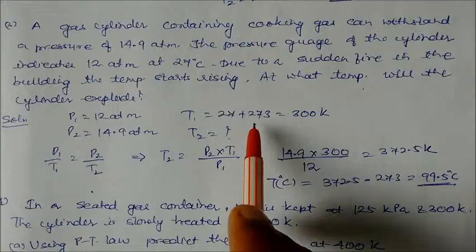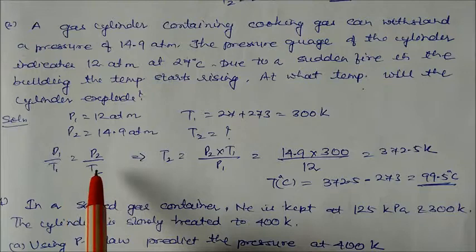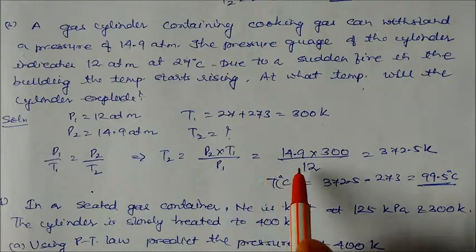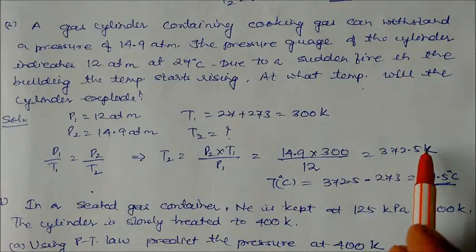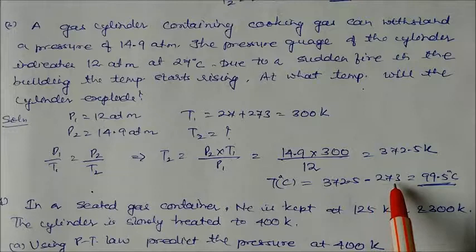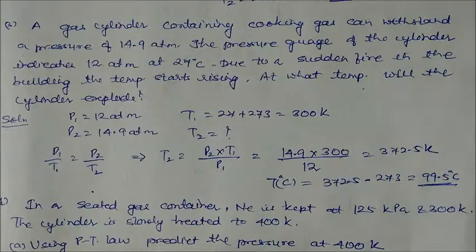Using Amonton's law, pressure-temperature law, T₂ = P₂ × T₁/P₁. Putting values, T₂ = (14.9 × 300)/12 = 372.5 Kelvin. If you want in degree centigrade, subtract 273 from this value, you get 99.5°C. This is our answer.